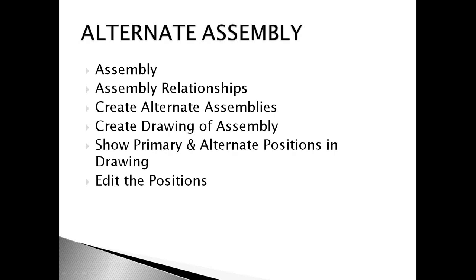We're also going to create a drawing of that assembly, not only creating a drawing but also showing primary and alternate positions at the drawing level. This is actually new functionality introduced in ST5. If you have ST4, the primary and alternate positions at the draft level are not going to be available — you have to be on ST5. Finally, we're going to edit those positions and show how we can bring changes through the assembly to the draft, giving full control over the positions of the assembly we wish to show.